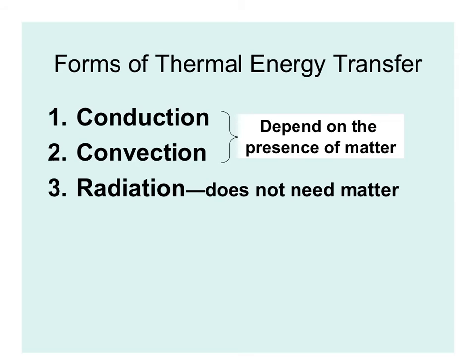We're going to finish by talking about how thermal energy can be transferred between objects. There are three ways to transfer thermal energy: conduction, convection, and radiation. It's important to note that conduction and convection depend on the presence of matter, whereas radiation does not.